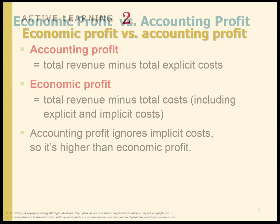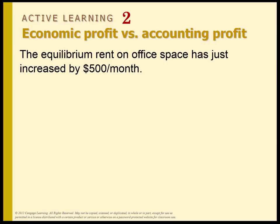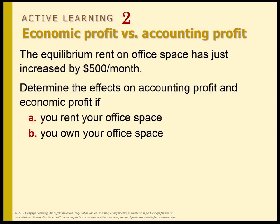Let's do a quick example. The equilibrium rent on office space has just increased by $500 a month. Determine the effects on both accounting and economic profit if, perhaps, you rent your office space, or maybe you own your office space. Go ahead and take a couple of seconds and think about what accounting and economic profit will look like in Case A and Case B if the equilibrium rent increases by $500 a month.